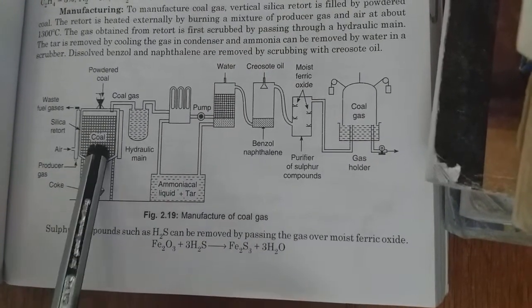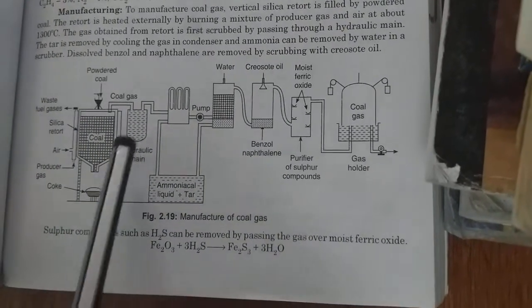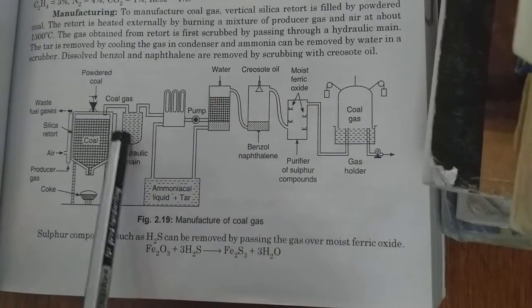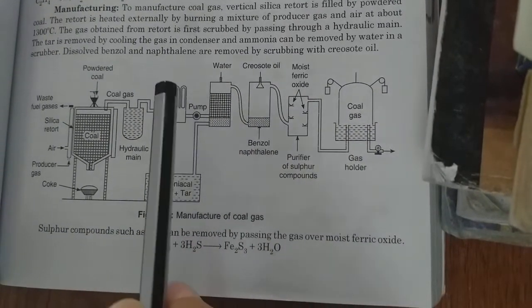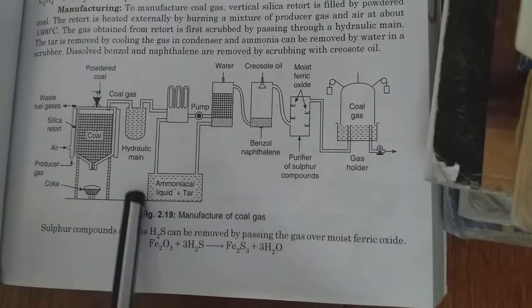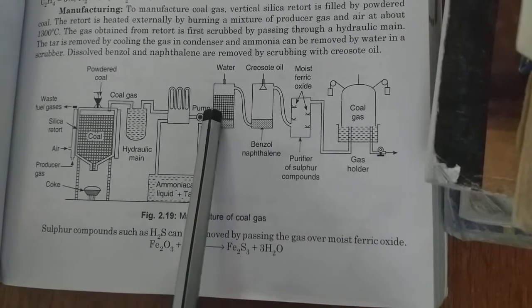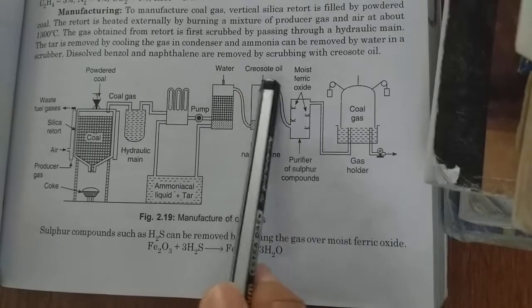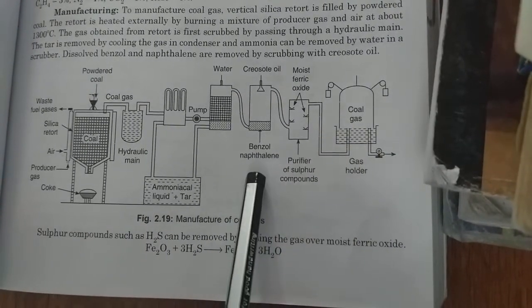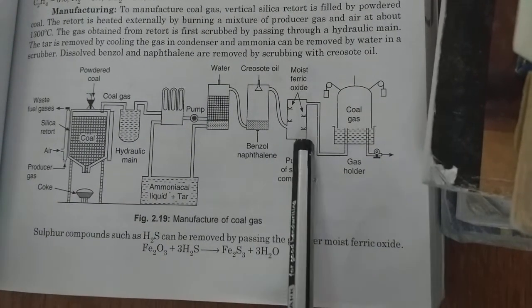When coal is converted into coke, the gas produced is called coal gas, which first passes through the hydraulic main. Because of scrubbing with water and cooling with condenser, ammonia liquid and tar is separated here. After that it is scrubbed with water and petroleum oil for removing benzol and naphthalene.